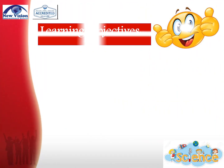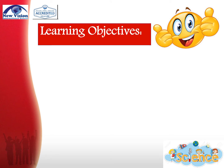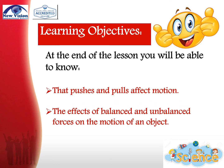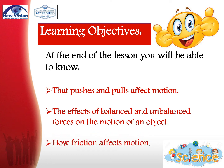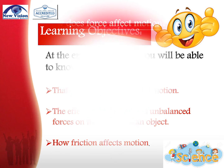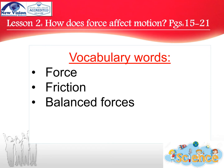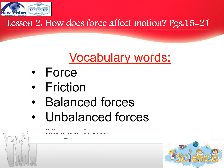As usual, every lesson, we have learning objectives. At the end of the lesson, you will be able to know that pushes and pulls affect motion, the effects of balanced and unbalanced forces on the motion of an object, and how friction affects motion. By the end of this lesson, you will also be able to figure out the meaning of these words: force, friction, balanced forces, unbalanced forces, and magnetism.